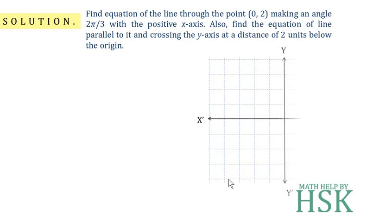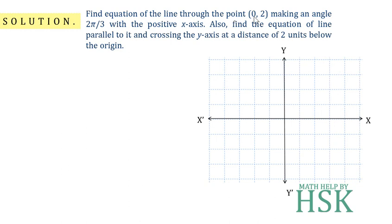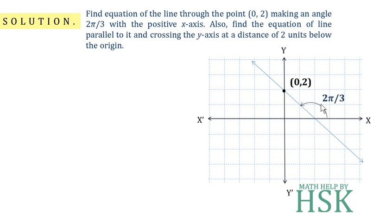To solve this question, first we draw the coordinate axis. We have to find the equation of a line through the point (0, 2), so we draw a line passing through that point. The angle 2π/3 is 120 degrees, so the line makes an angle of 120 degrees with the positive x-axis.